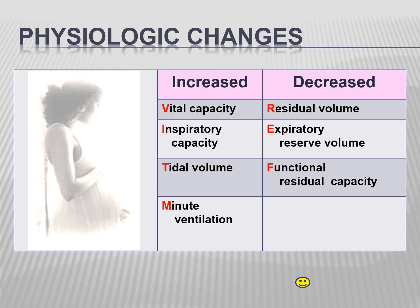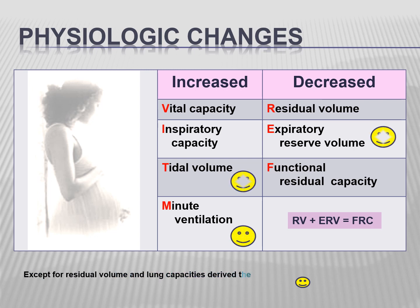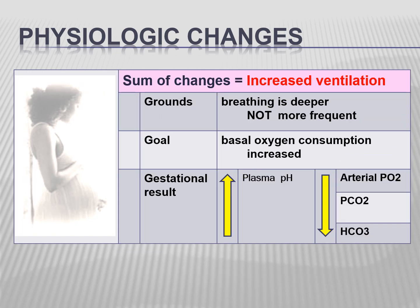This causes a 10 to 25% decrease in functional residual capacity, the sum of expiratory reserve and residual volume. In summary, this table shows the physiologic changes of pregnancy in the pulmonary system. Except for residual volume and lung capacities derived therefrom, these parameters can be measured using direct spirometric techniques. The sum of changes leads to increased ventilation overall in pregnancy.